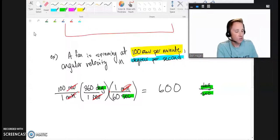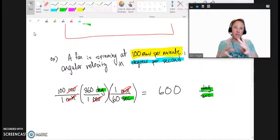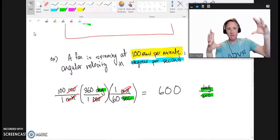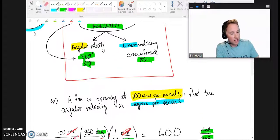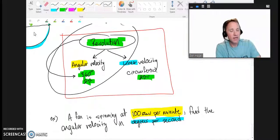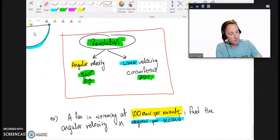Now, notice one thing I didn't use here. They didn't tell me how big the fan blade was. Is this a small fan blade? Is it a big fan blade? They didn't tell me the radius of this fan blade. And that's because when you are talking about angular velocity, radius doesn't come into account. The only time radius would come into play is if you're talking about linear velocity.